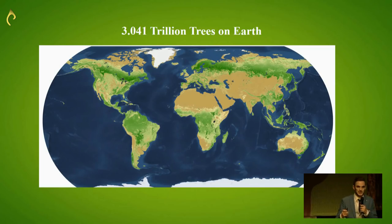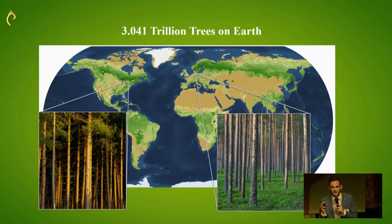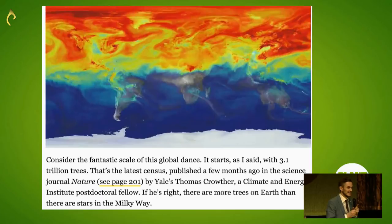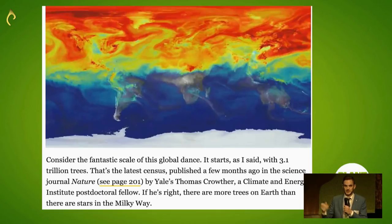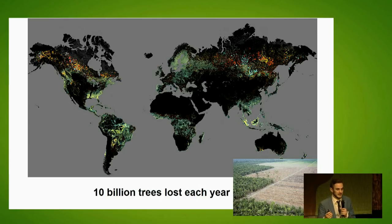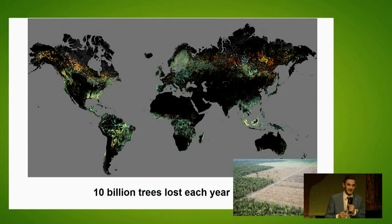But this map doesn't just show us how many trees there are. It also shows us information about the structure of forests around the world, so we can predict which kinds of animals live there and what kind of habitat it is. It can also tell us about the carbon cycle to help improve climate projections. More importantly, it helps us see how many trees are lost each year — through fire, deforestation, and disease, we're losing about 10 billion trees each year.